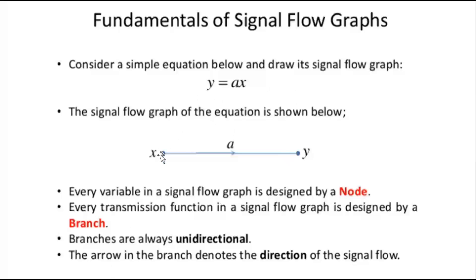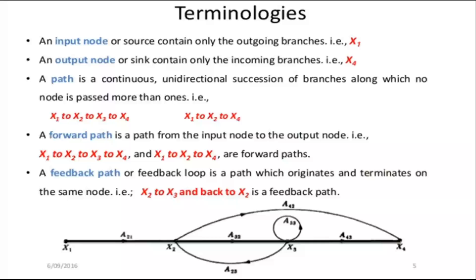Every variable in a signal flow graph is represented by a node. Here x and y are variables represented as nodes. Every transmission function in a signal flow graph is represented by a branch — the nodes are connected by a straight line marked with gain a. A branch is always unidirectional; the arrow mark indicates only one direction. The arrow in the branch denotes the direction of the signal flow.